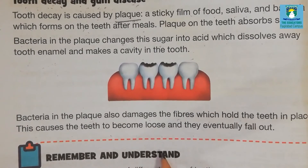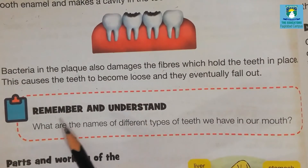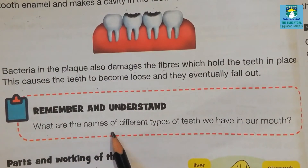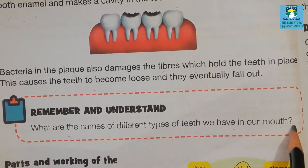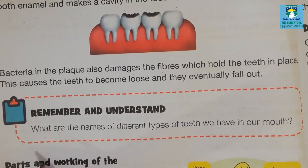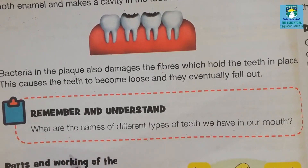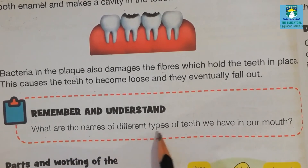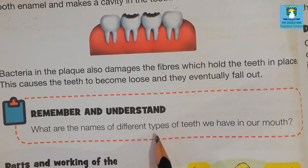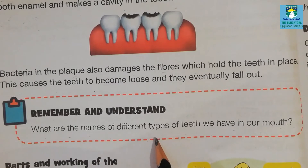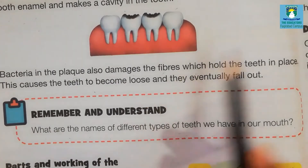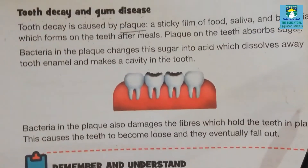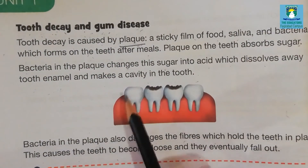Remember and understand the names of the different types of teeth we have in our mouth. In the previous class we discussed the four different types of teeth: first is incisor, second canine, third molar, and fourth premolar. These are the four types of teeth.